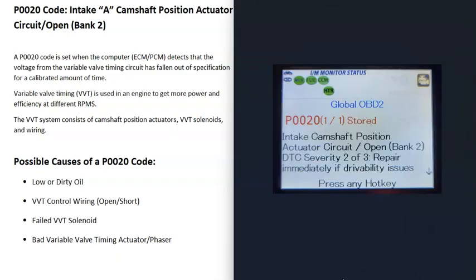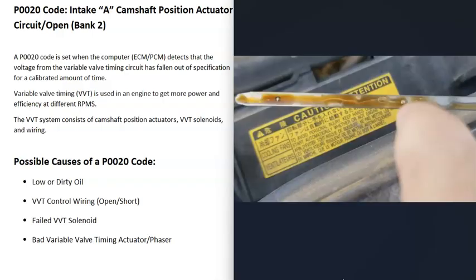The first thing to do whenever you have any issues with variable valve timing is to check the engine oil and make sure it's not really low or really dirty. Engine oil flows through all the solenoids, the actuator, and all the variable valve timing components. If the engine oil is low or really dirty, that can throw it off. Even though this code points to circuitry or wiring, always check your engine oil first.